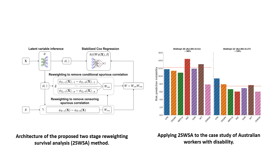In our work, we proposed a two-stage reweighting survival analysis method to build a stable model for survival analysis. Two reweighting components are developed to remove spurious correlations induced by censoring and conditional prediction. We apply our method to a case study of Australian workers with disabilities. We can see that the larger the distribution shift, the more stable our method is when comparing with the baseline.